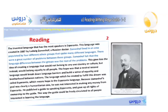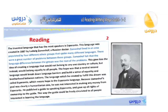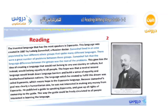This gave him the idea of creating a language that would not belong to any one country or culture, but instead would belong equally to all people. The hope was that a neutral second language would break down language barriers and build a sense of equality and brotherhood between nations. The language he created to fulfill this dream was called Esperanto, which means 'hope' in the Esperanto language. Because Zamenhof's goal was clearly a humanitarian one, he was not interested in making any money from Esperanto. He published a guide to speaking Esperanto and gave up all rights of ownership to it.